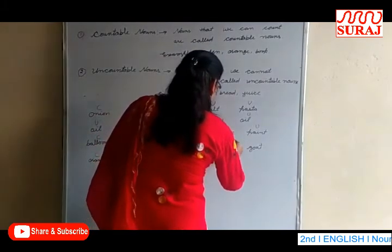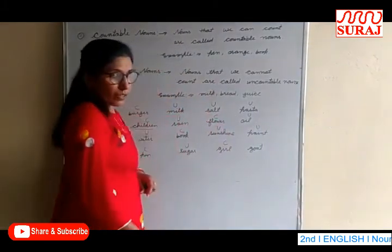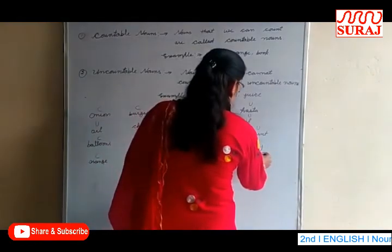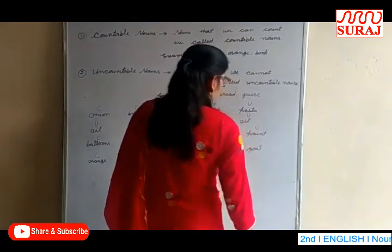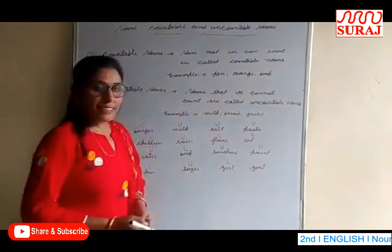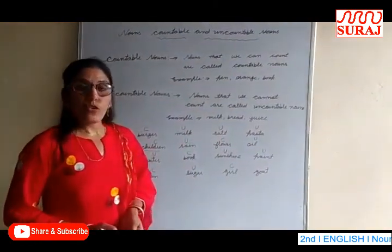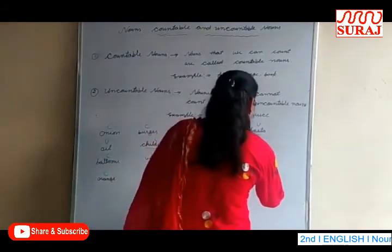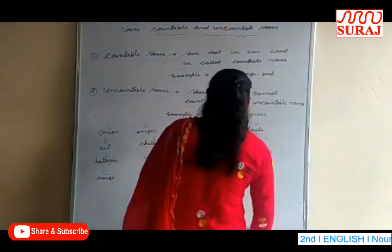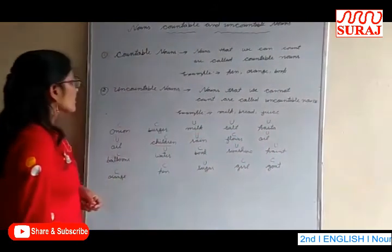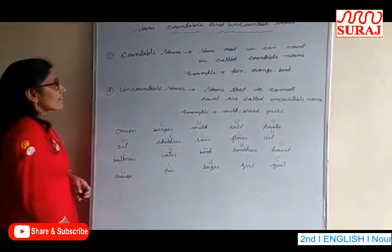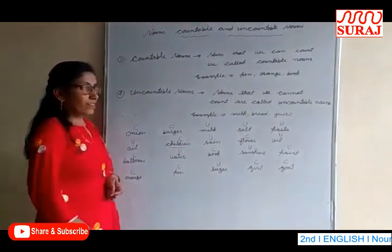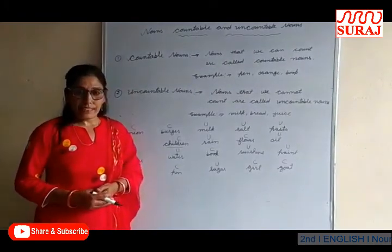Girl — countable. Goat — we can make plural, so goat is countable. Students, these are our countable and uncountable nouns. Thanks and have a nice day.